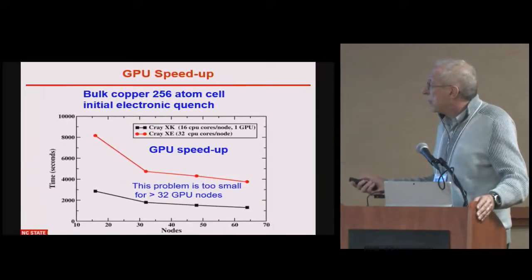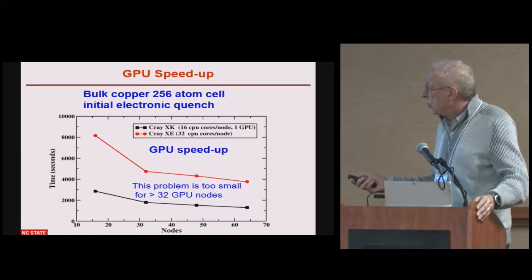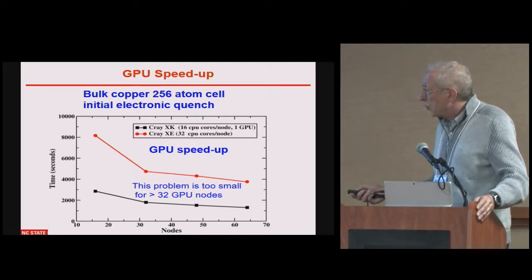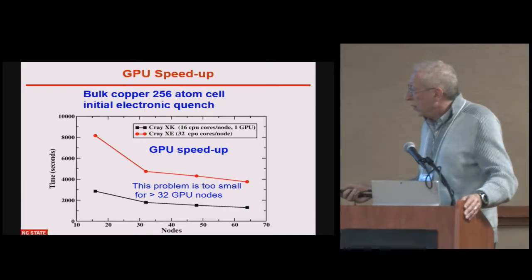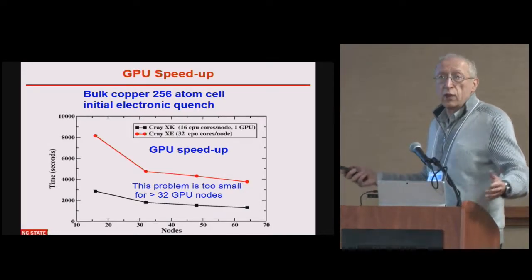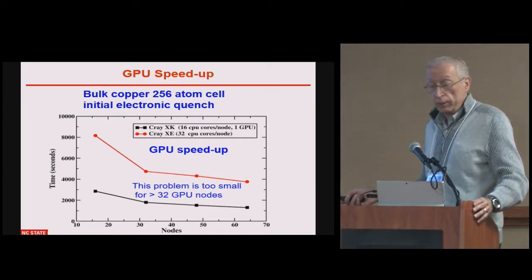Here you see an example of CPU versus GPU: the CrayXE without GPU versus the CrayXK with GPU, and you can see a large speedup. You can also see that more than 32 GPUs is too many for that problem size, so you don't get a gain beyond that point.